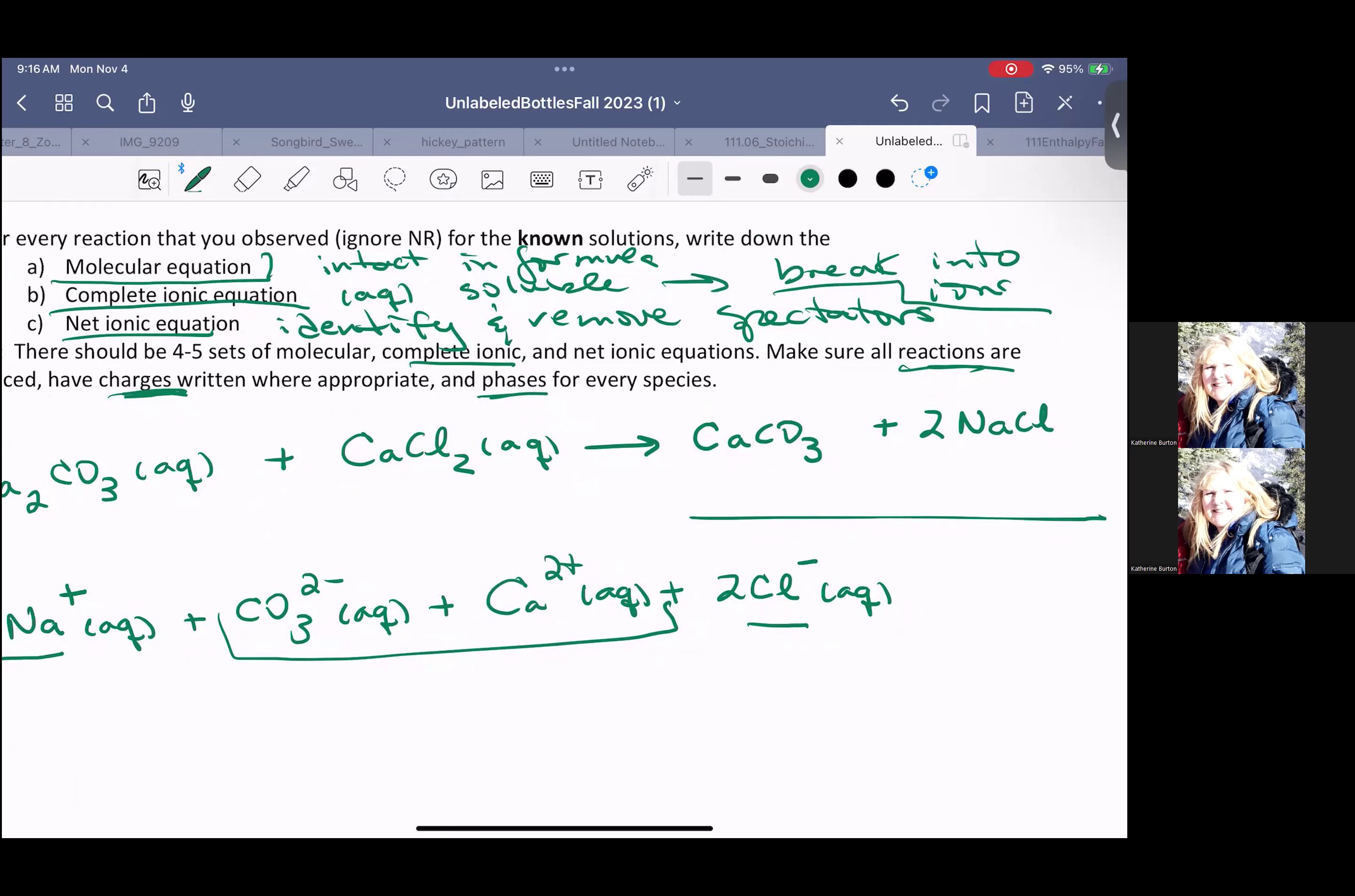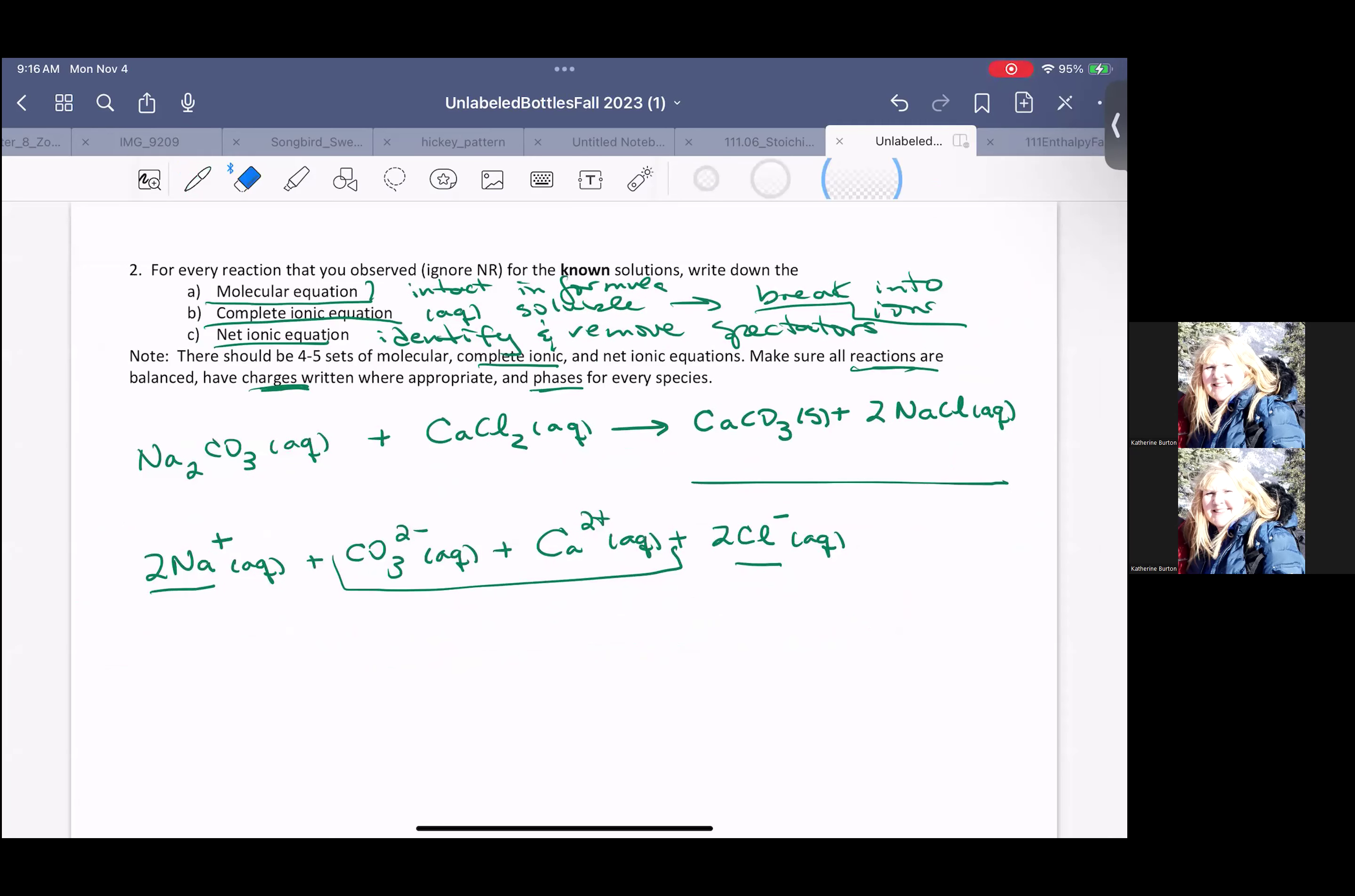Now I'm going to need to apply the solubility rules. All group one compounds, sodium compounds are soluble. Calcium carbonate is insoluble. Most carbonates are insoluble. And that is going to be the solid implying it's an insoluble ionic compound. So we have the complete molecular written. Now we need to do the complete ionic and the net ionic.